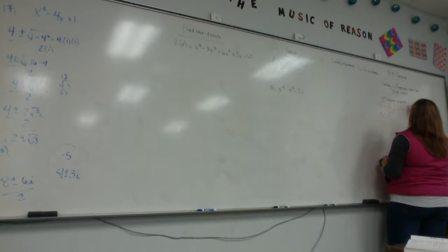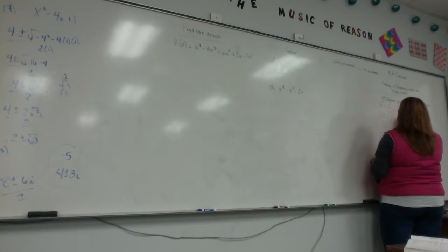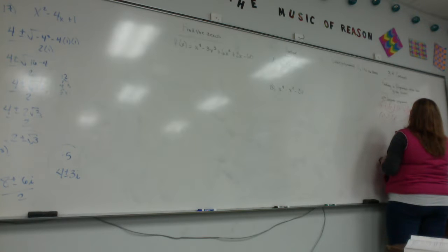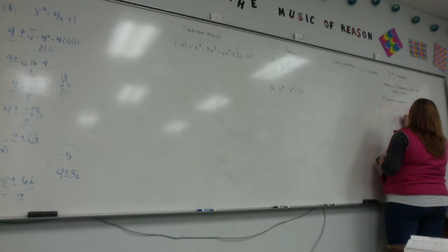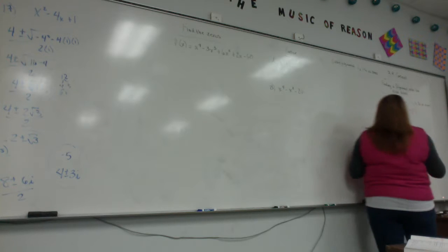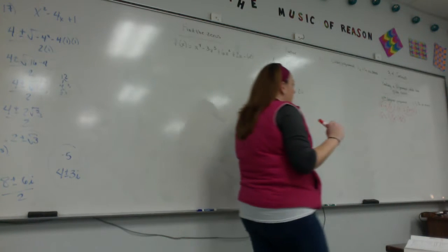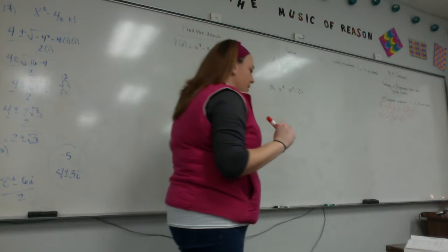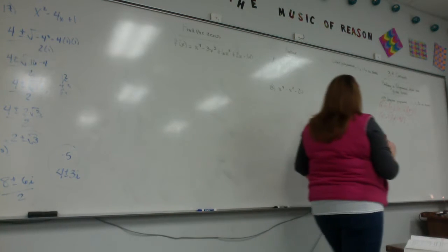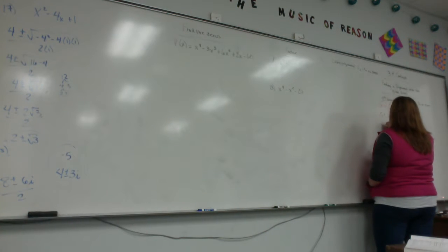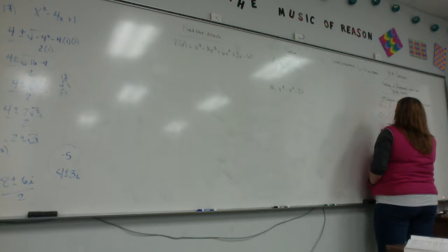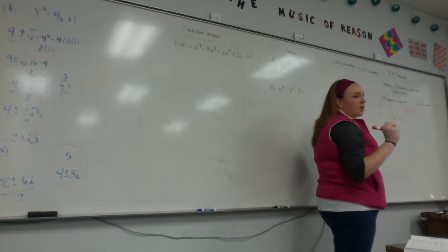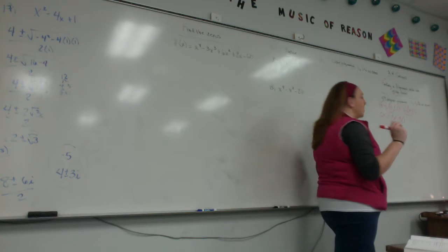Same thing over here. I can just FOIL the outsides and get x squared minus 9i squared, because the middles are going to cancel. What do you know about i squared? What does i squared equal? Negative 1. So then this becomes, instead of saying minus 9i squared, I'm going to say x squared plus 9.